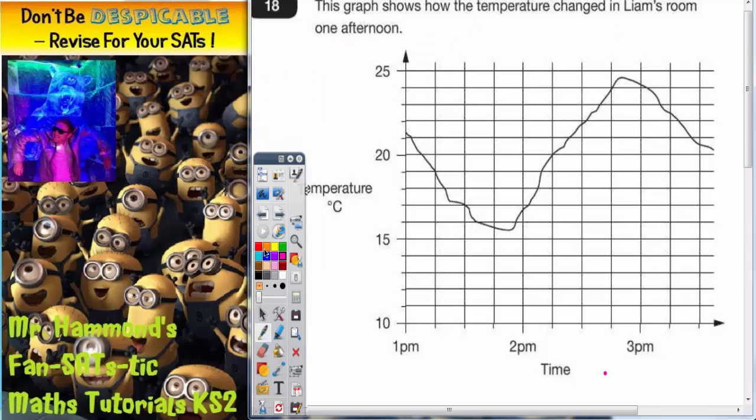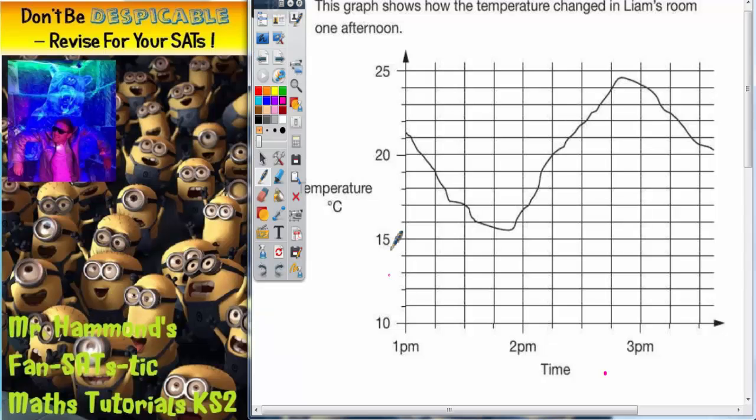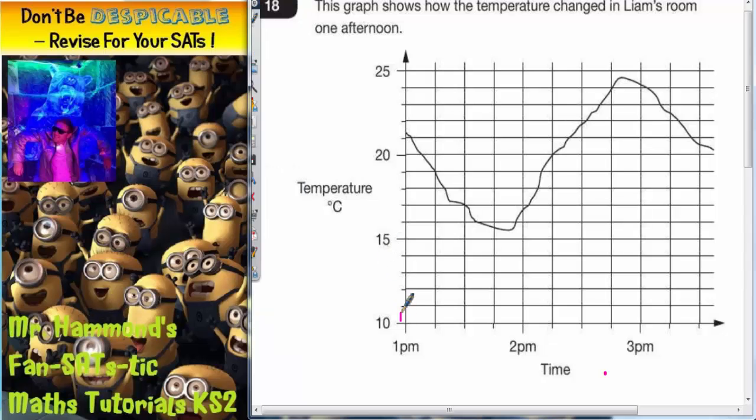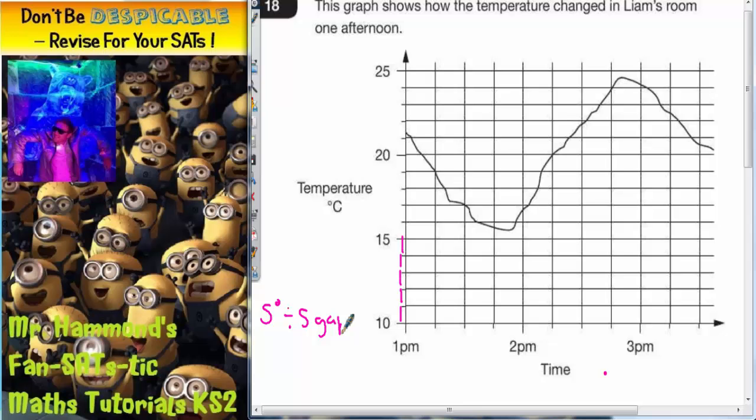First of all, we've got temperature up the side, and the temperatures appear to be going up in fives, but there are five mini gaps between each lot of five. So, five degrees shared by five. Five degrees divided by five gaps means each gap must be worth one degree.